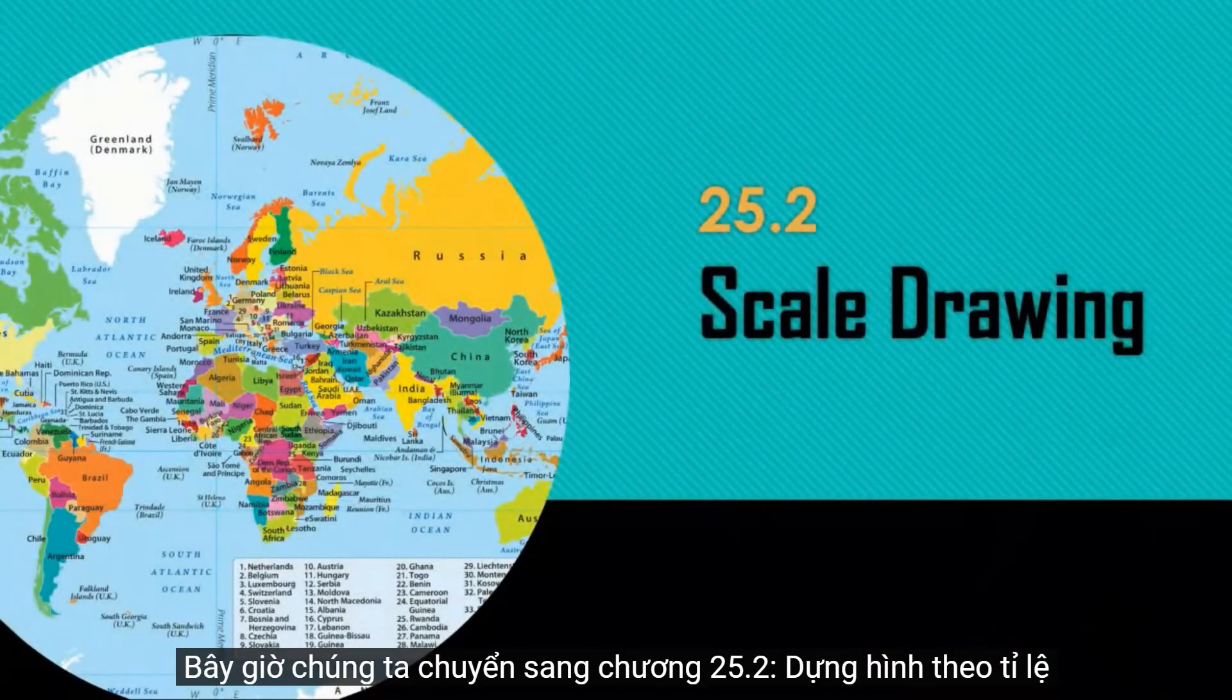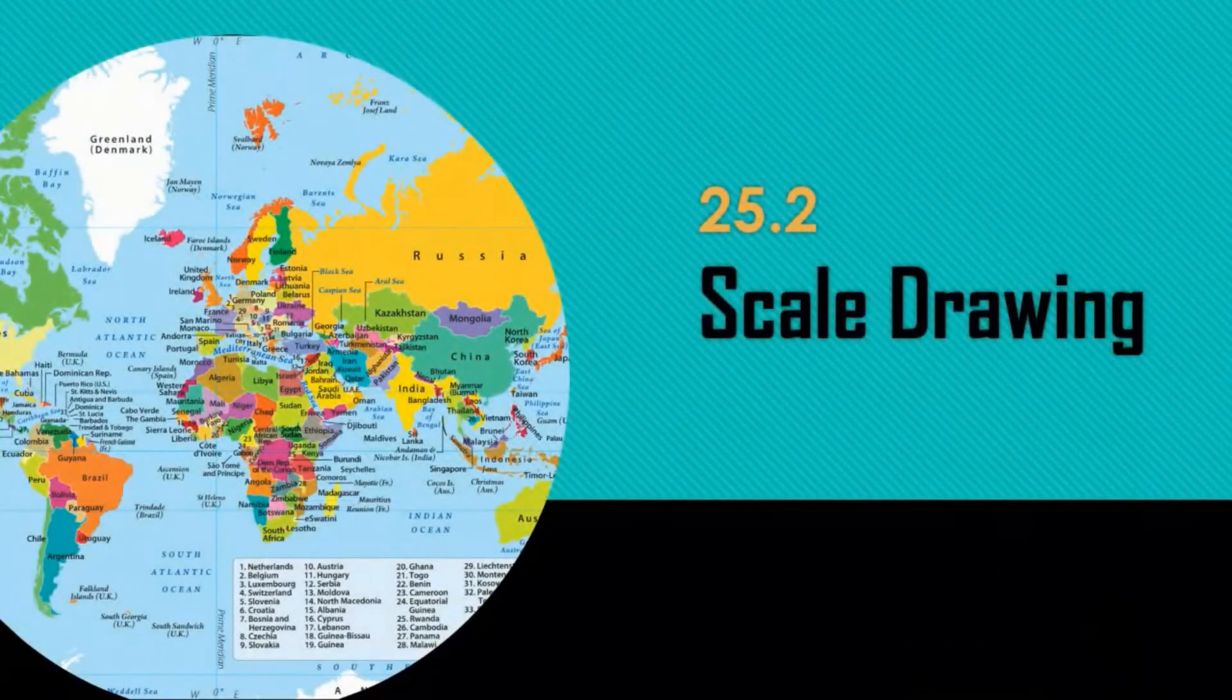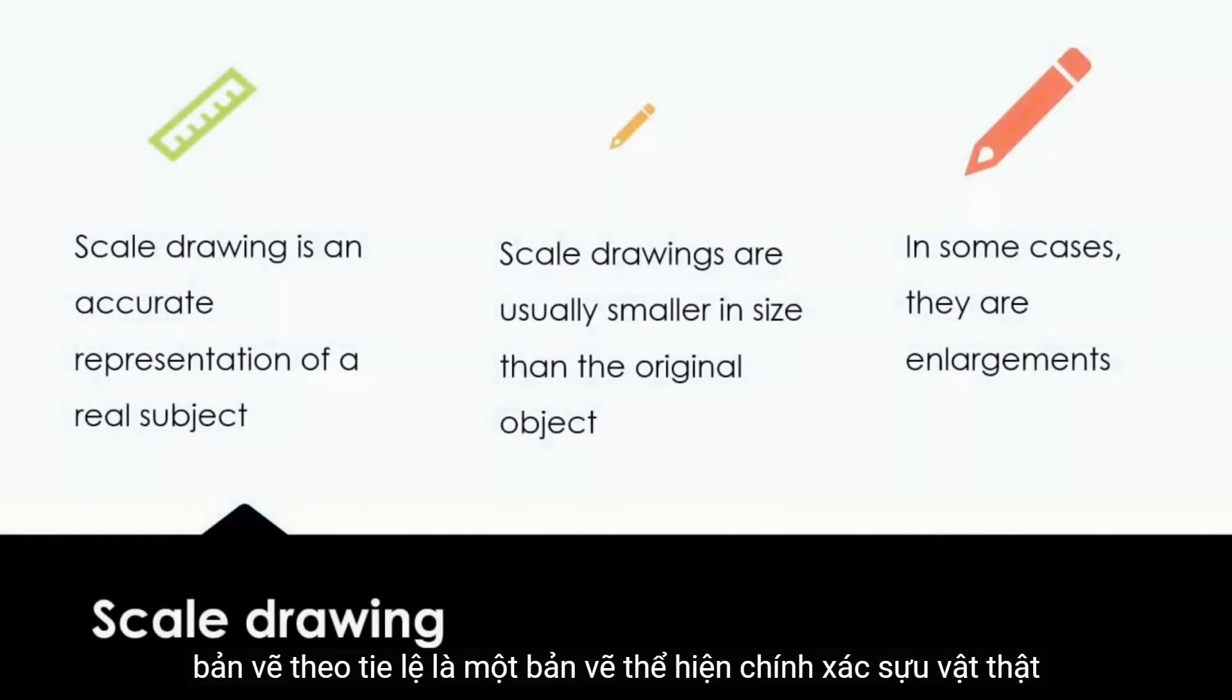Now we move on to 25.2: Scale drawings. A scale drawing is an accurate representation of a real object. Scale drawings are usually smaller in size than the original objects. However, in certain cases, they are enlargements.